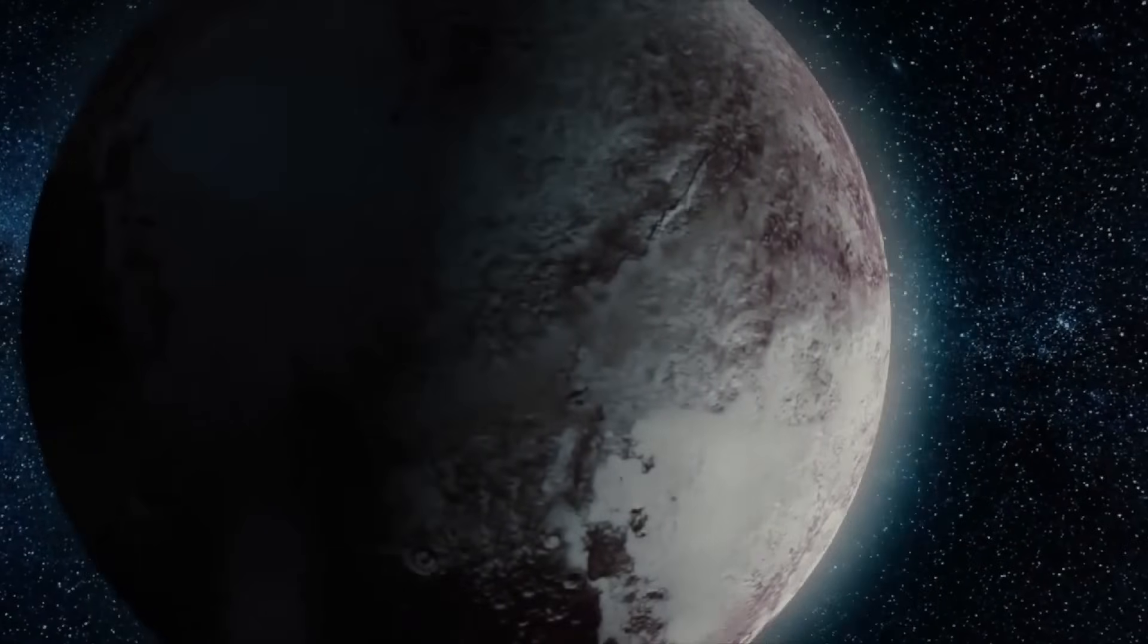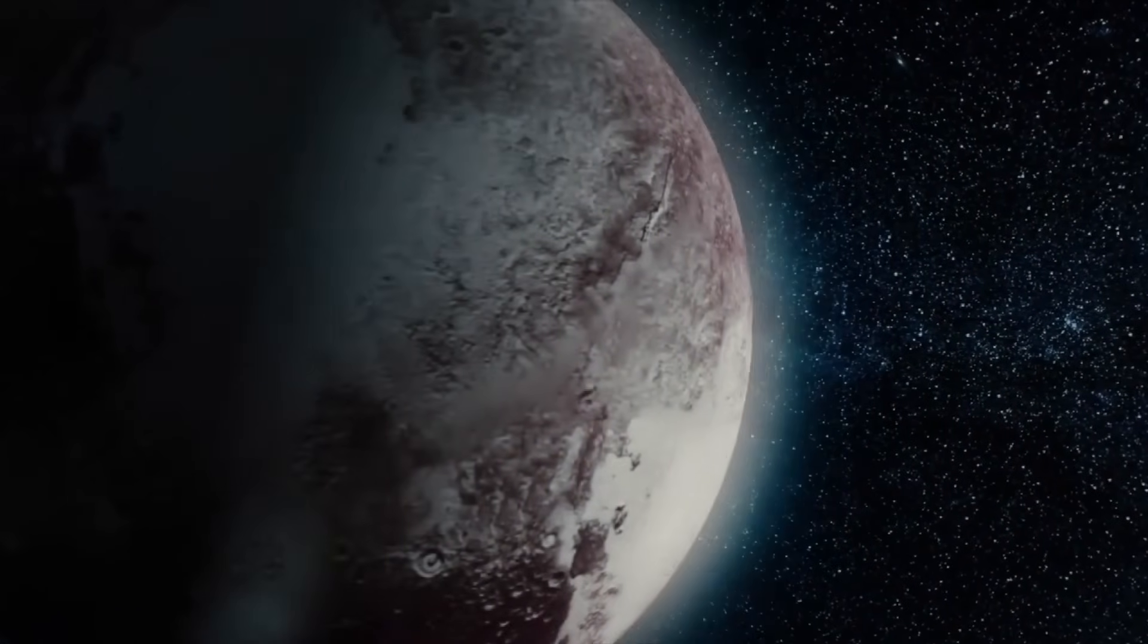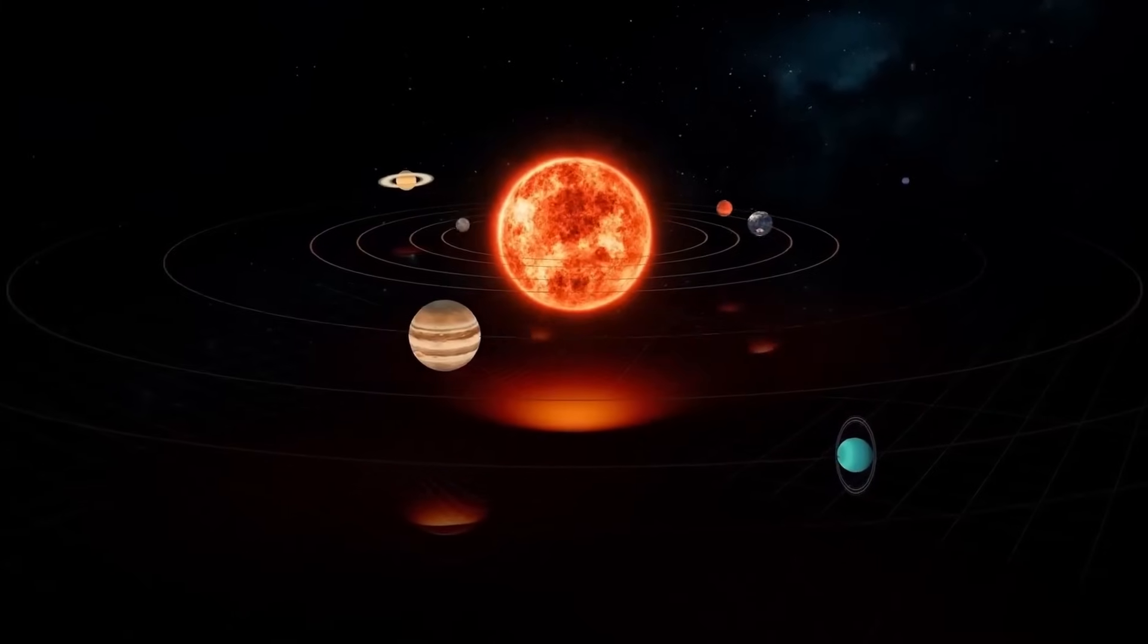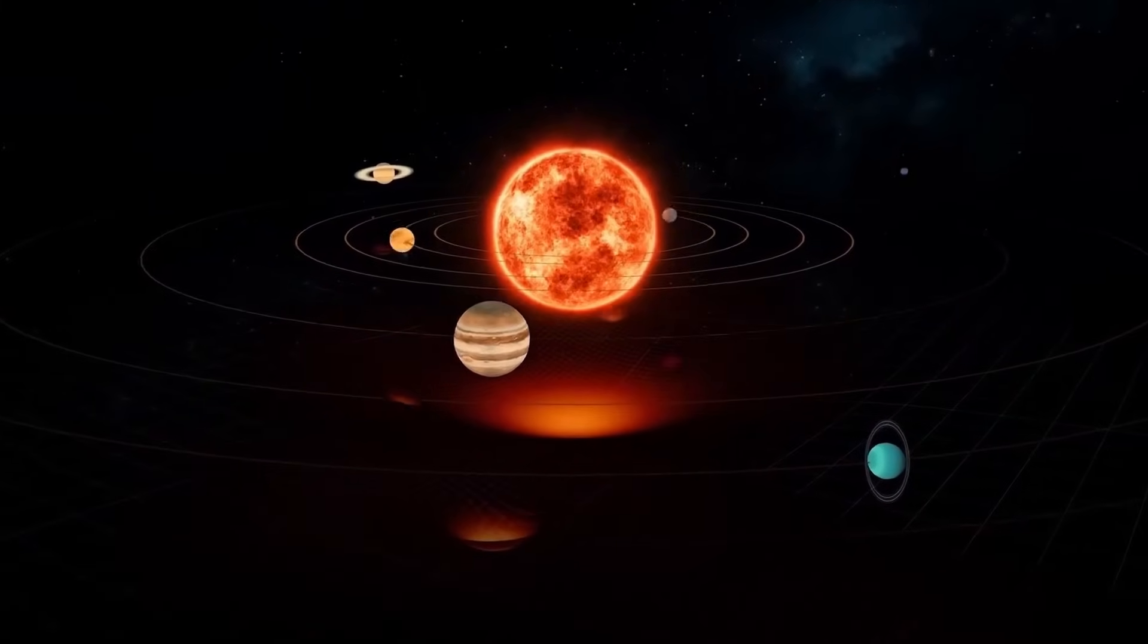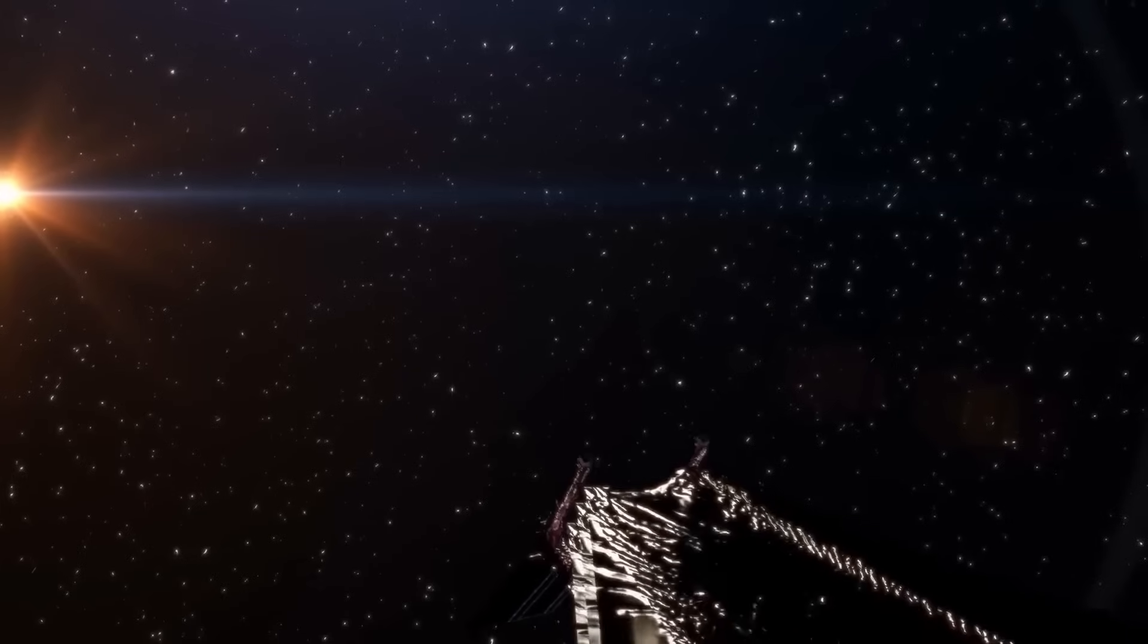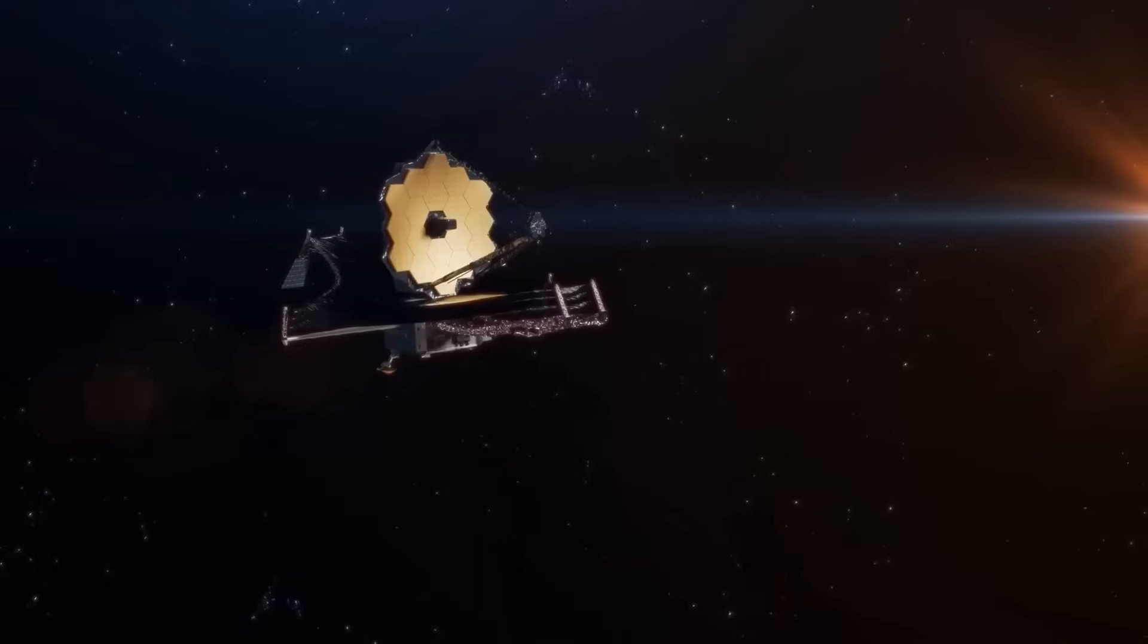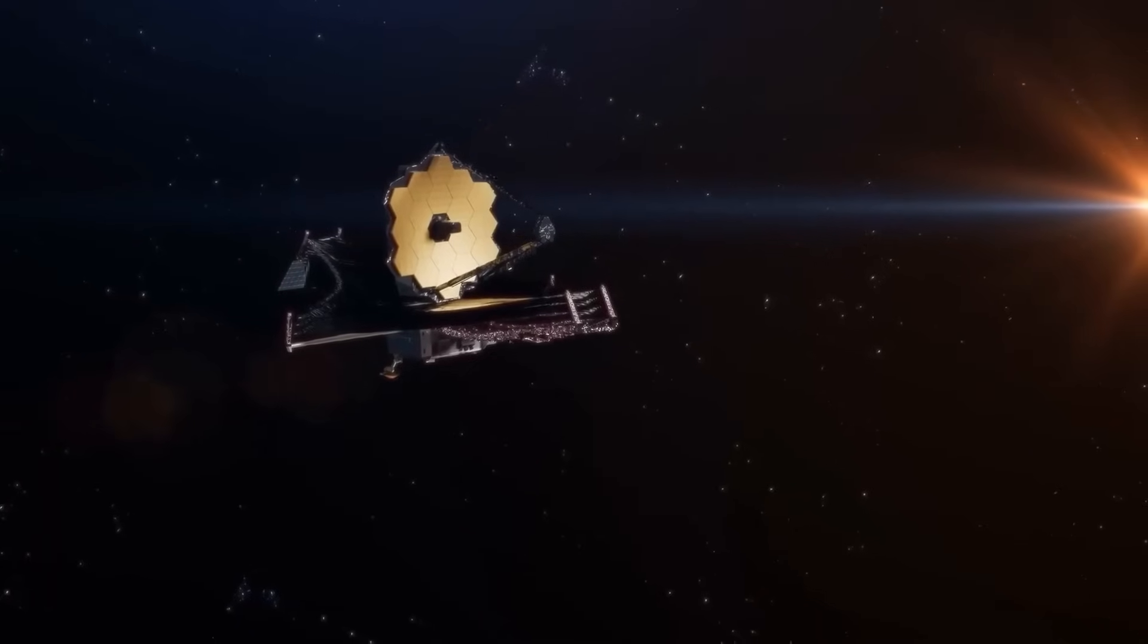The TRAPPIST-1 system is an excellent illustration of this. It is orbited by seven rocky planets that are comparable to Earth and a weak red dwarf star. Three of these seven planets may have liquid water, which is necessary for life as we know it, because they are located in what is known as the habitable zone. The TRAPPIST-1 star produces enough light to possibly support life despite being smaller and colder than our sun.